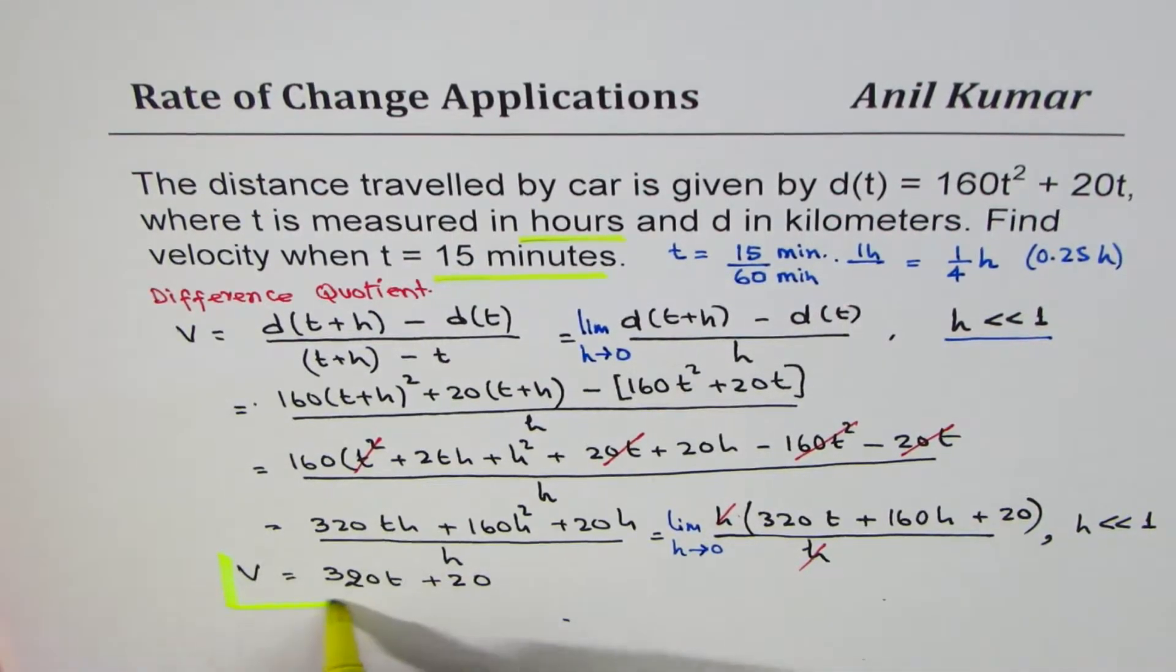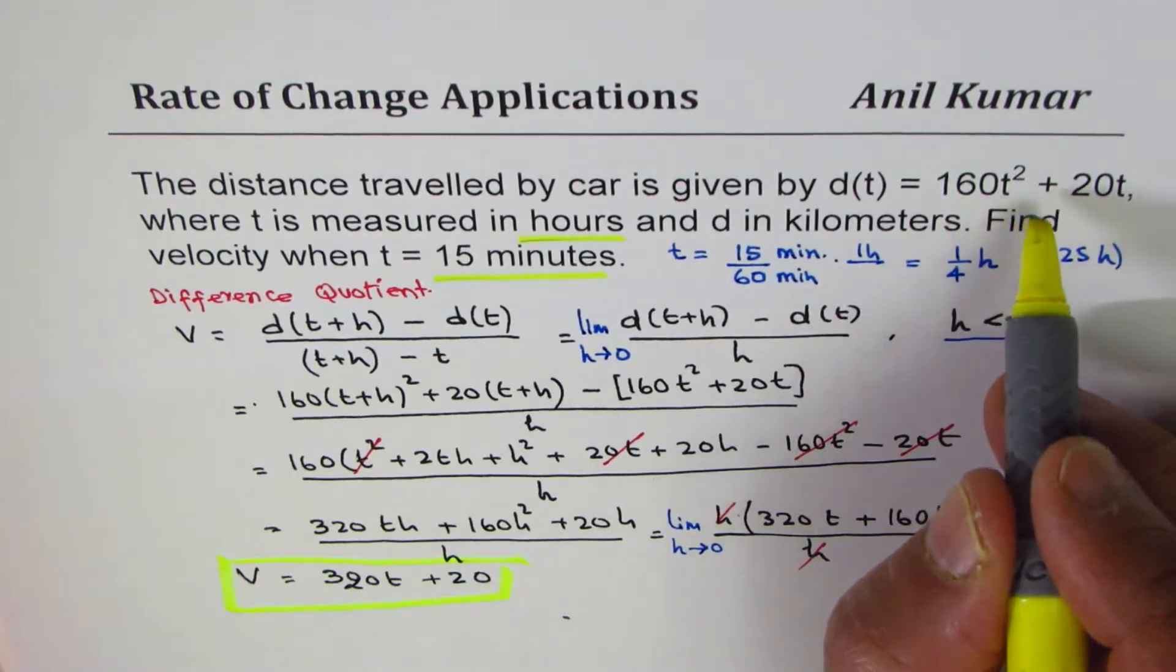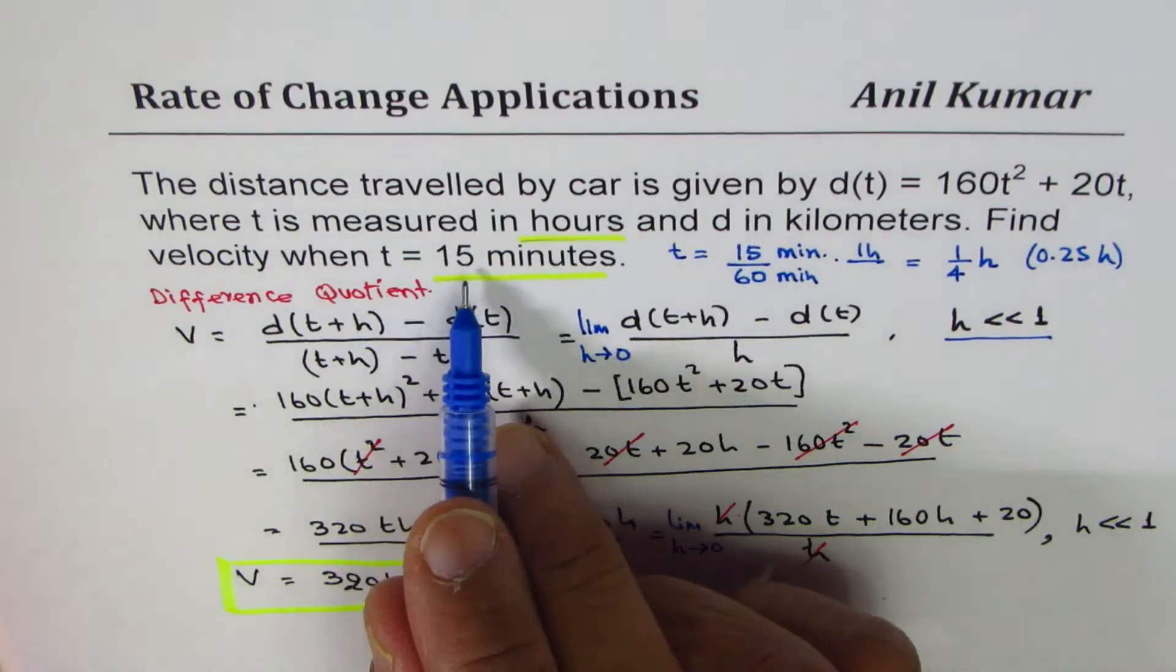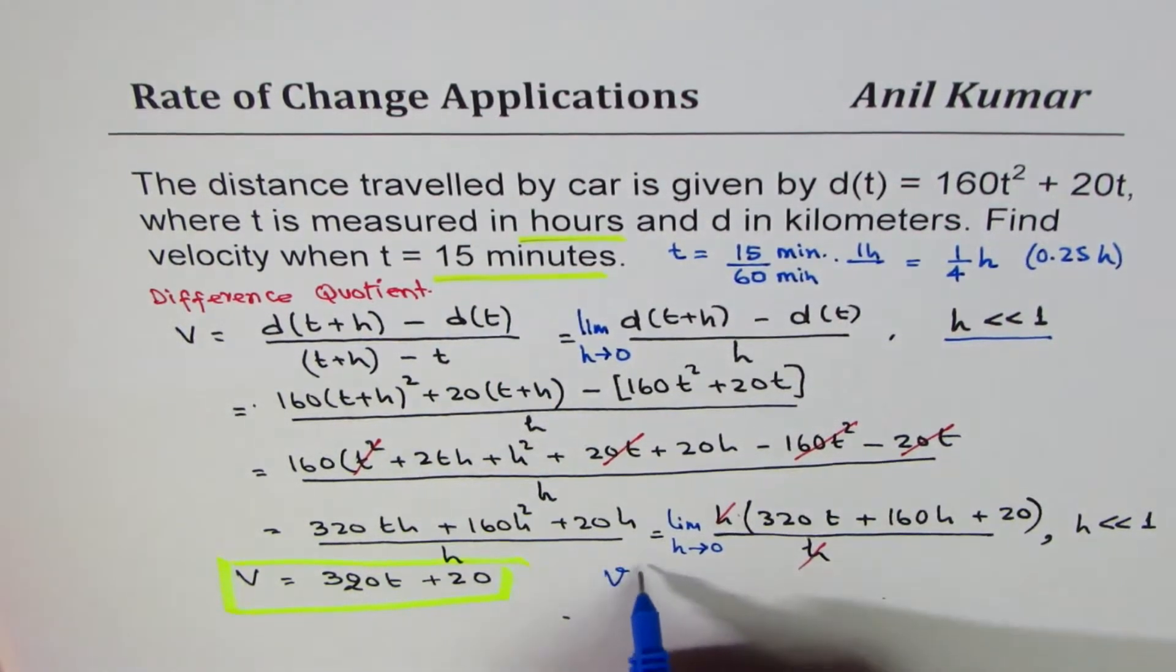Now you can find velocity for any time t till this equation is valid. Now in our case what do we need to find at t = 15 minutes or 1/4 of an hour. So for us the velocity at t = 15 minutes.